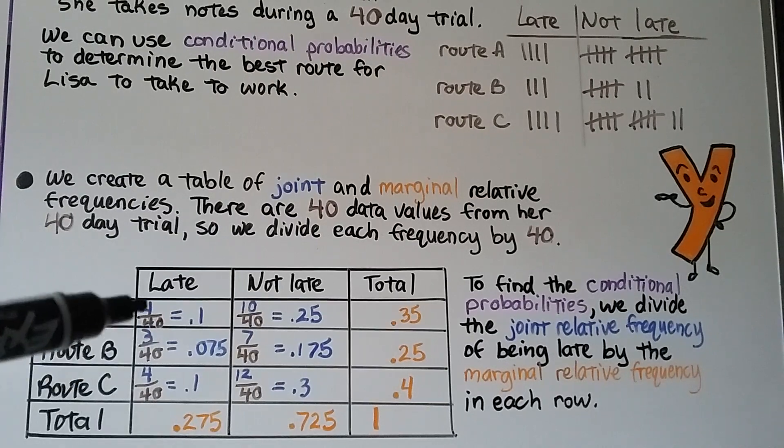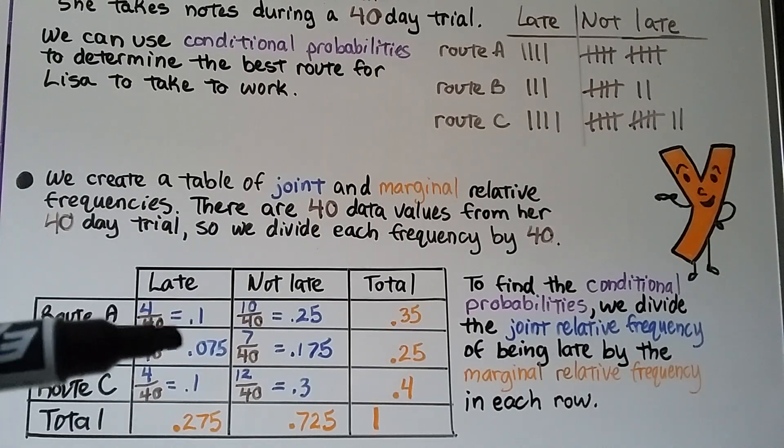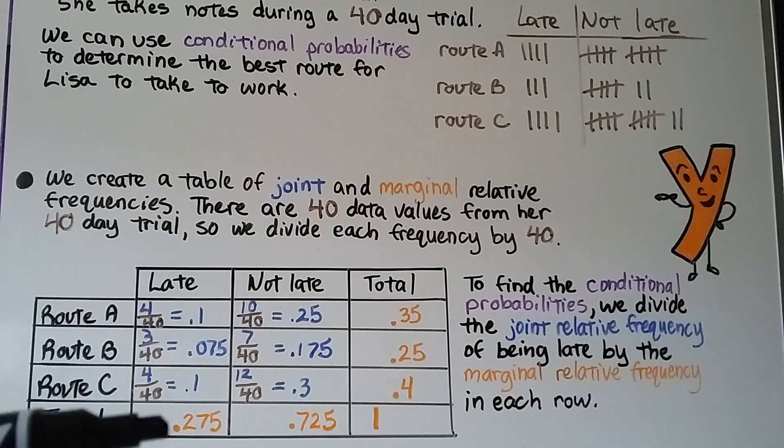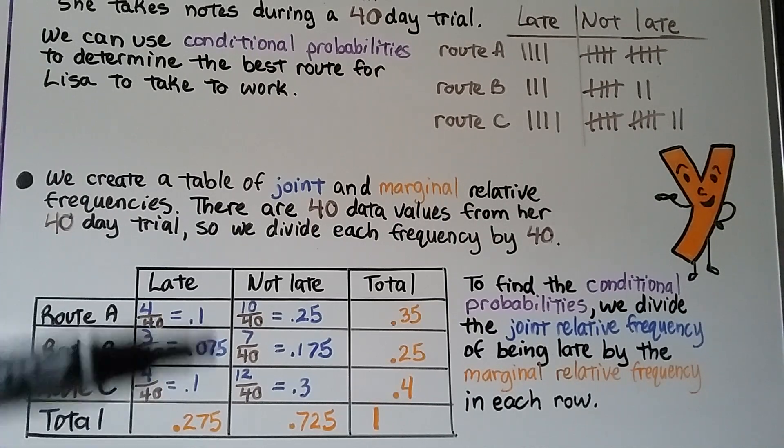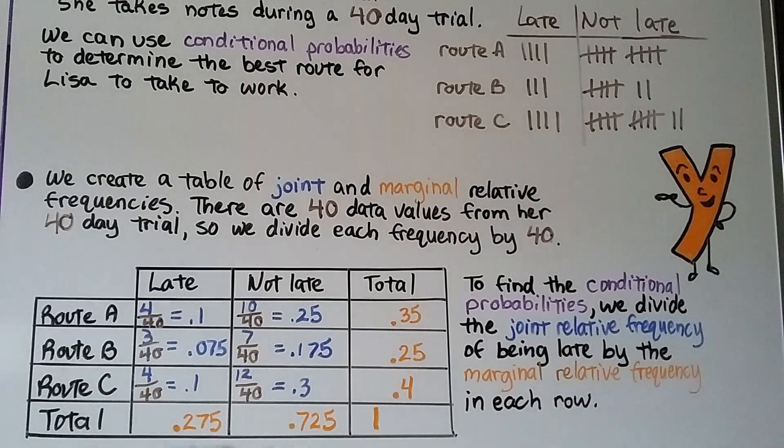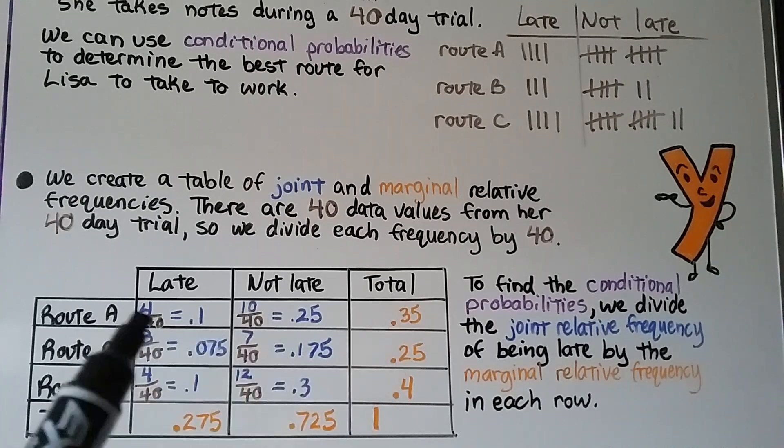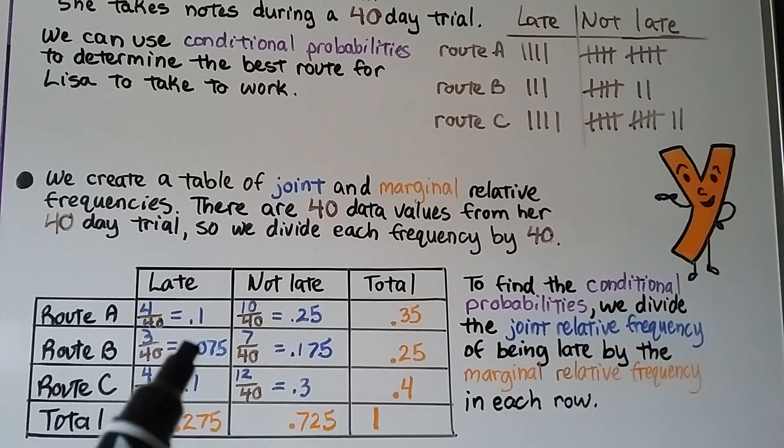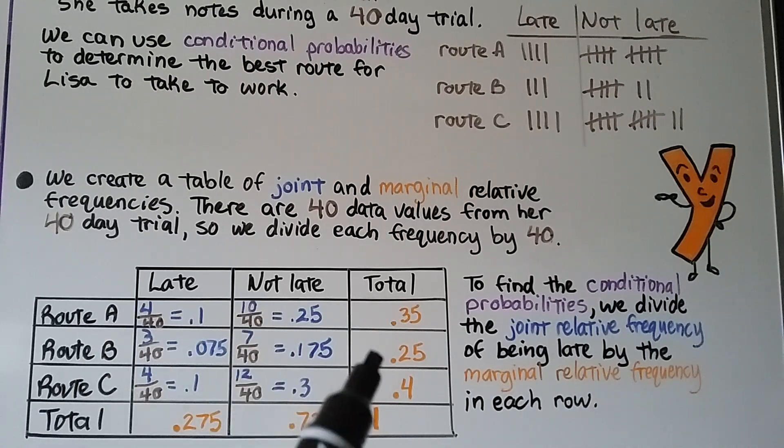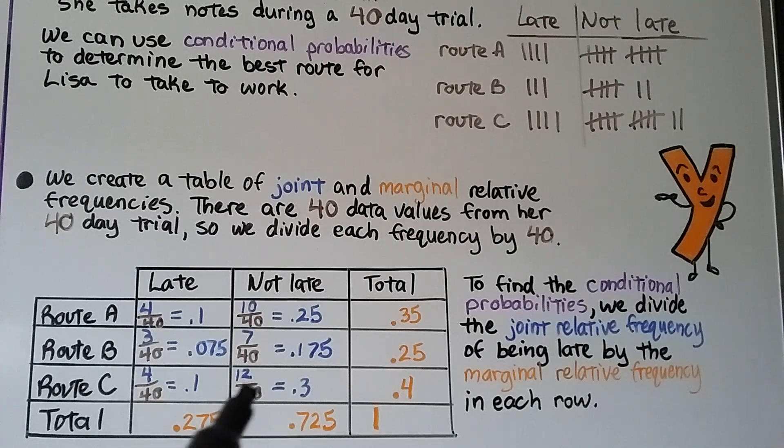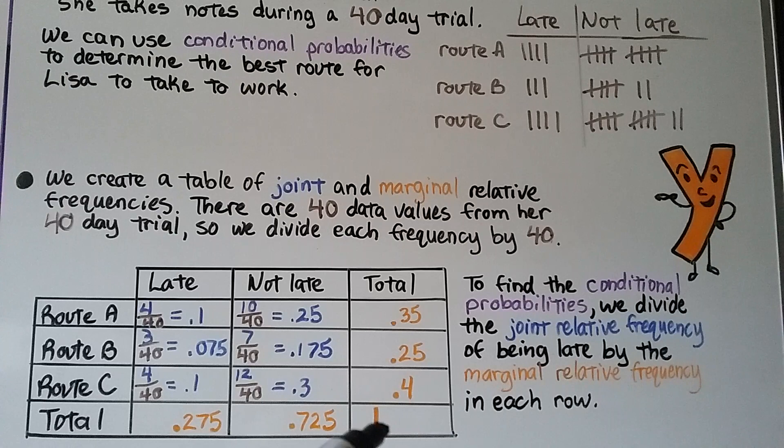We find their decimal equivalents, and we add 0.1 plus 0.075 plus 0.1 and get 0.275, adding this column. We add this column for not late and get 0.725. We add this and this, and it should equal a one. We add the route A and we get 0.35. We add the late and not-late for route B and get 0.25, and the late and not-late for route C and get 0.4. When we add these, we get a 1.